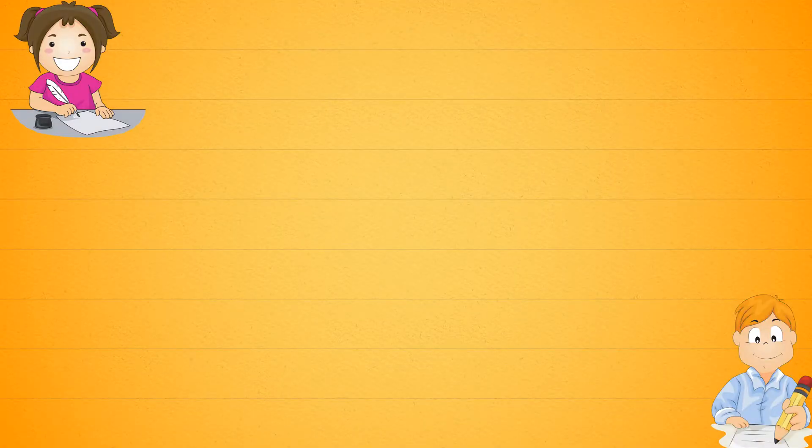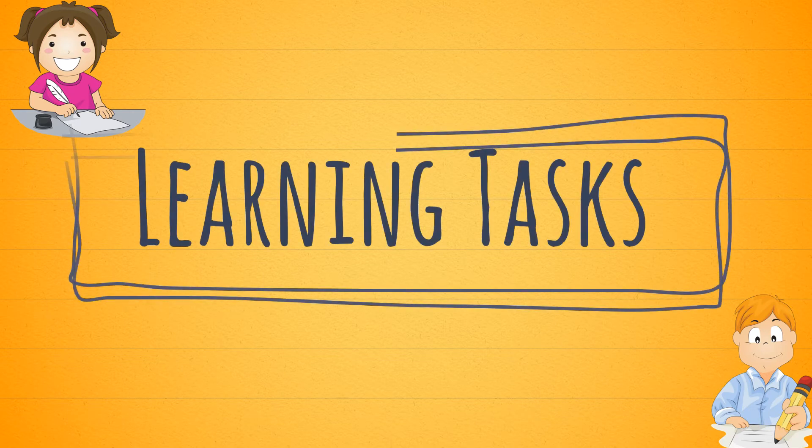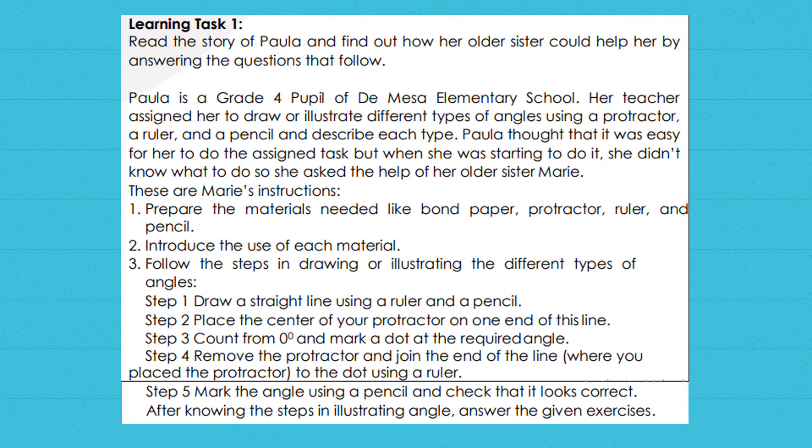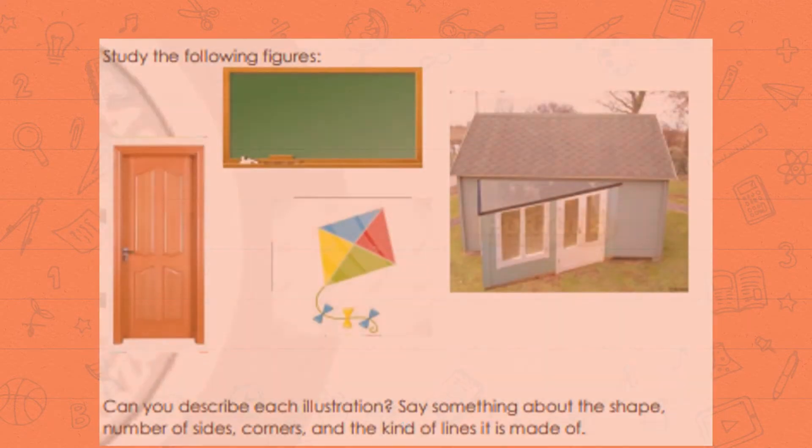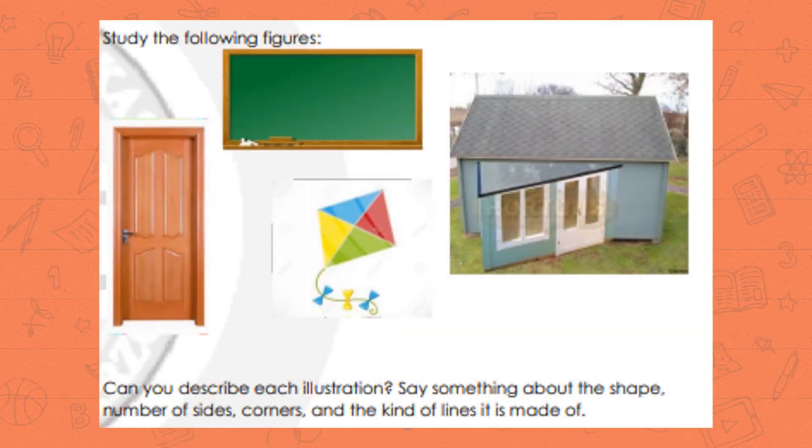Now, pwede nang simulan ang pagsasagot ng mga learning tasks. Learning task 1: Read the story of Paula and find out how her older sisters could help her. Learning task 2: Read the story of Mrs. Perez and find out how she solves her problem. Study the following figures. Can you describe each illustration? Say something about the shape, number of sides, corners, and the kind of lines it is made of.